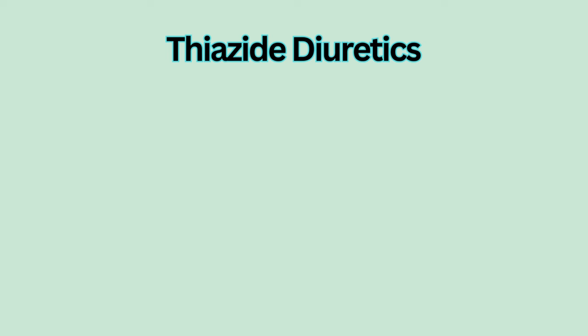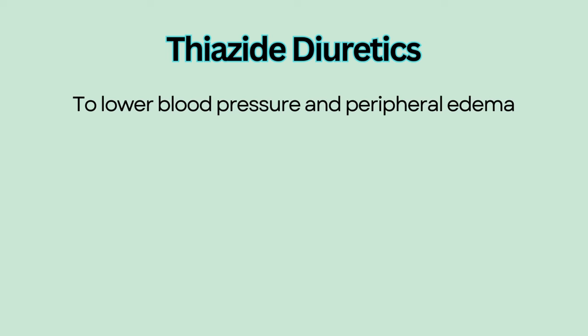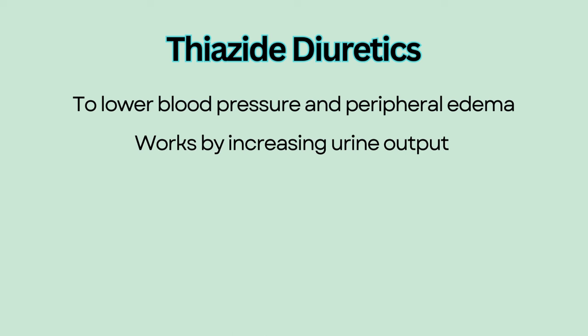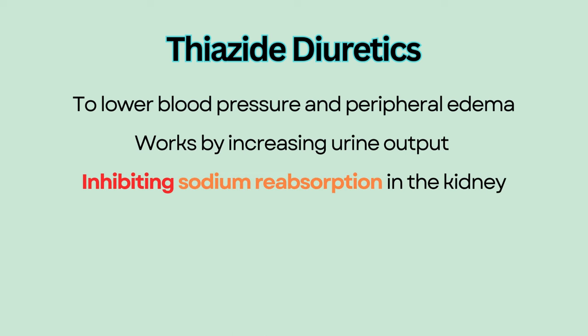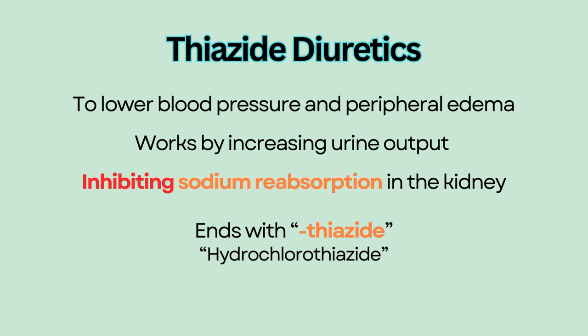Thiazide diuretics are given to lower blood pressure and peripheral edema. They increase urine output by inhibiting sodium reabsorption in the distal tubule of the kidney. Thiazide diuretics usually end with the suffix '-thiazide,' such as hydrochlorothiazide.